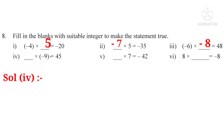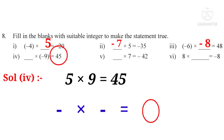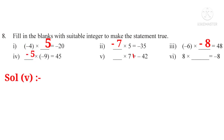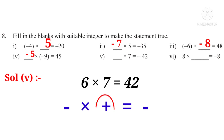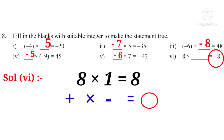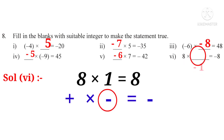Solution 4: To get a positive product with the number 9 — if the second integer is negative, the first must also be negative. 5 nines are 45, so put minus 5 in the blank. Solution 5: To get a negative product with the number 7 — if the second integer is positive, the first must be negative. 6 sevens are 42, so put minus 6 in the blank. Solution 6: To get a negative product with the number 8 — if the first integer is positive, the second must be negative. 8 once is 8, so put minus 1 in the blank.